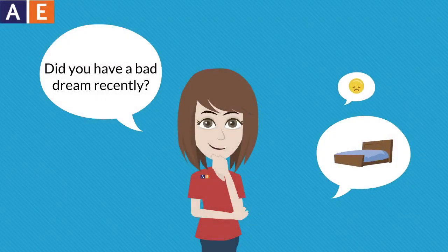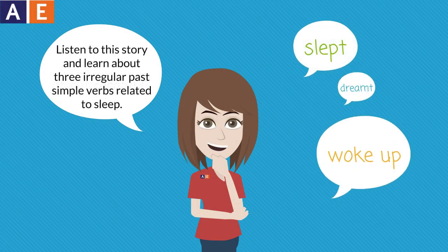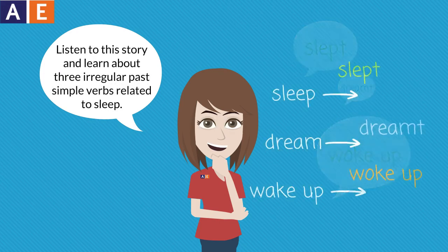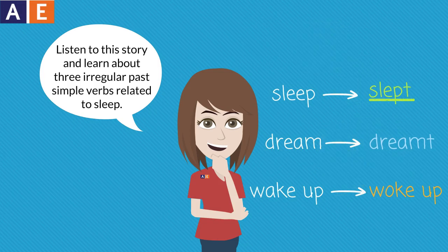Did you have a bad dream recently? Listen to this story and learn about three irregular past simple verbs related to sleep: slept, dreamt, and woke up.